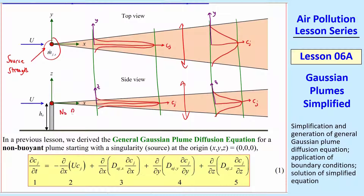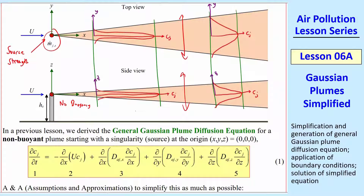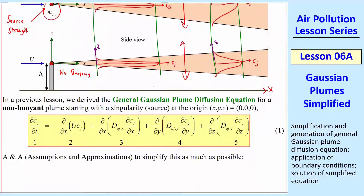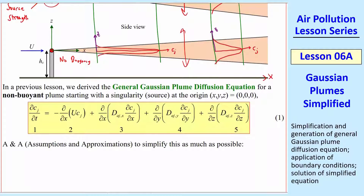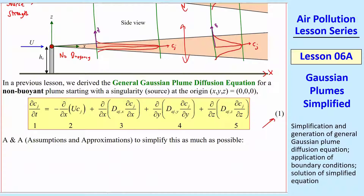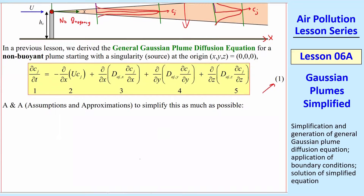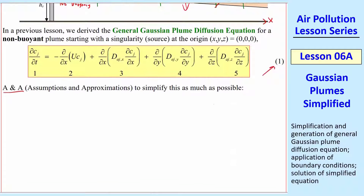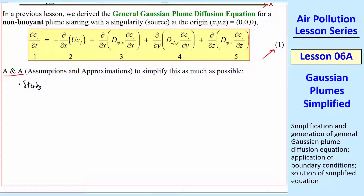We're assuming no buoyancy, because this plume, as soon as it is created as a singularity right at the origin, just starts spreading horizontally in the x direction and in the y direction. Last time we derived this equation; we are going to now simplify it, and I'll start numbering these equations for consistency. This will be equation 1. The first assumption is it's steady — no changes with time — so any term with time goes away. Term 1 goes away.